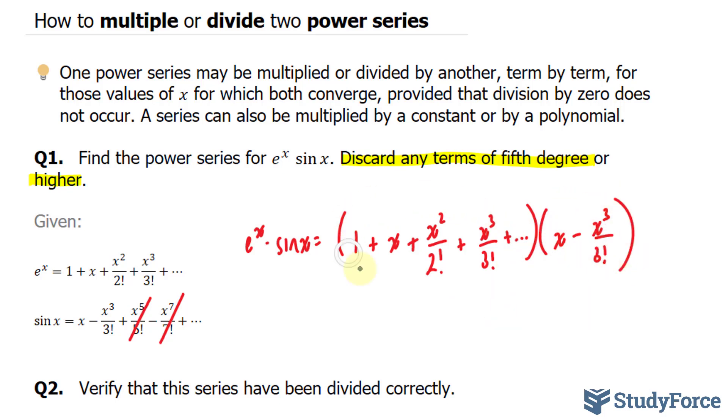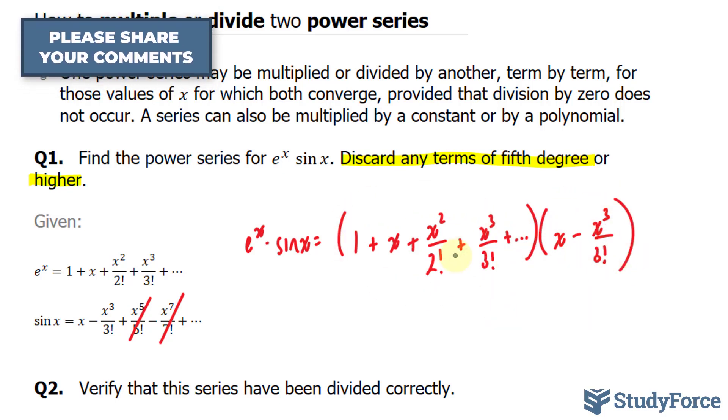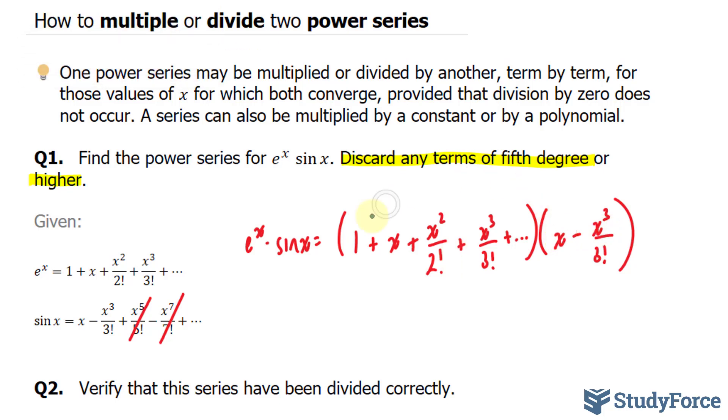This is a binomial being multiplied to a 4-termed algebraic expression. And what we normally do when it comes to expanding is take each of these terms, multiply this by 1, that gives us x, and this term multiplied to 1 gives us negative x to the power of 3 over 3 factorial, which is 6.